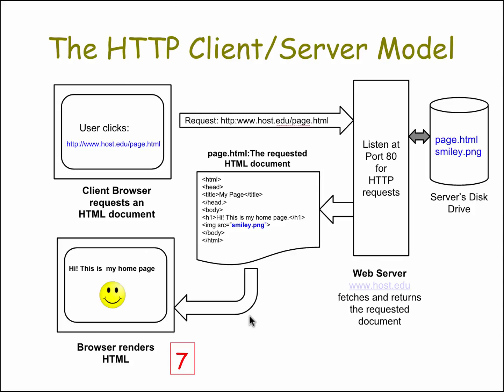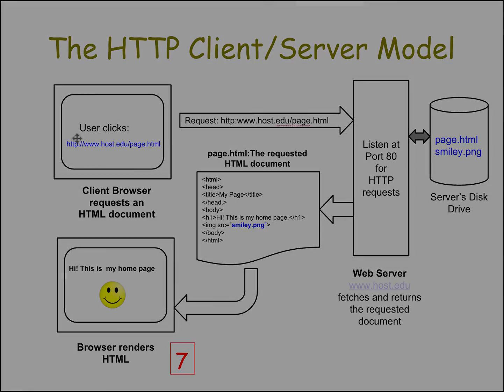I'd like you to try applying this model to the transactions that take place when you're using App Inventor and you request to open a specific project — say, your Paint Pot project. So let's pause here and give that a try.